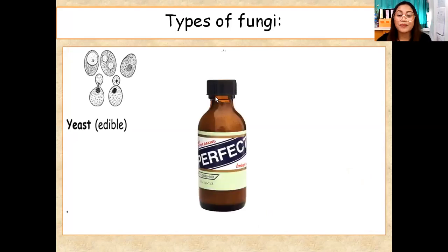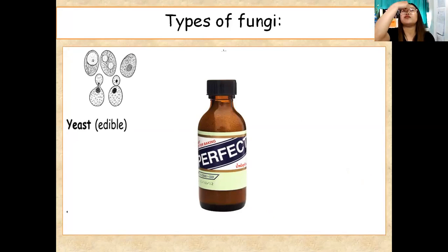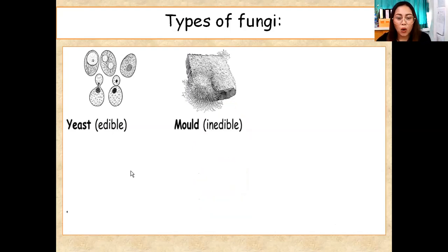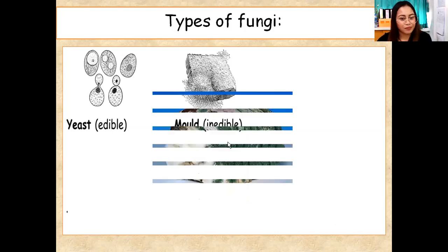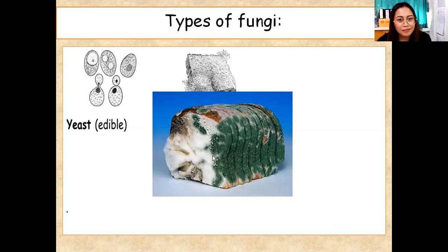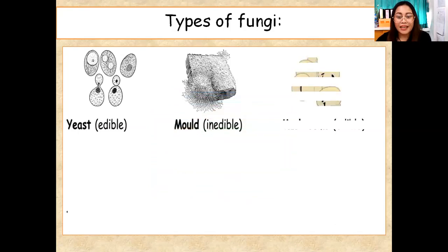Let's continue. What are the types of fungi? We have yeast — it is edible and is used for baking bread. But you cannot take it directly from the bottle and put it in your mouth; you need to bake it first. Next we have mold — mold is inedible, meaning you cannot eat it.